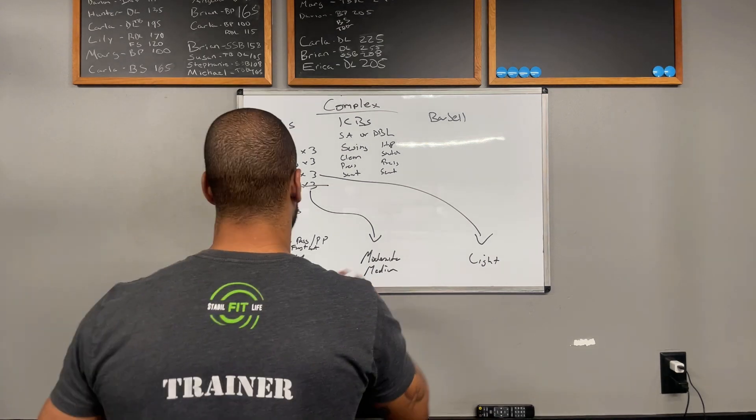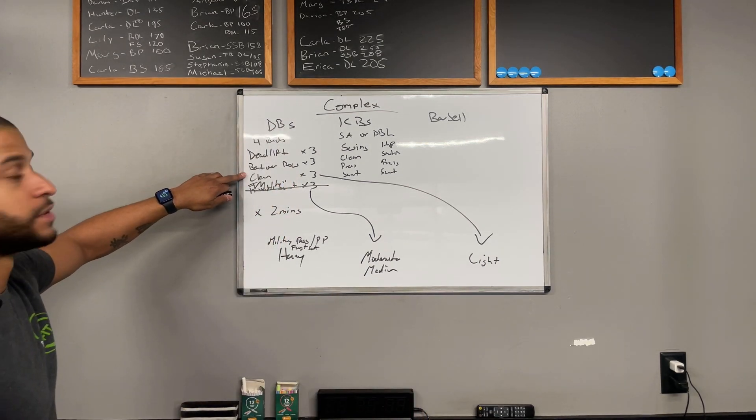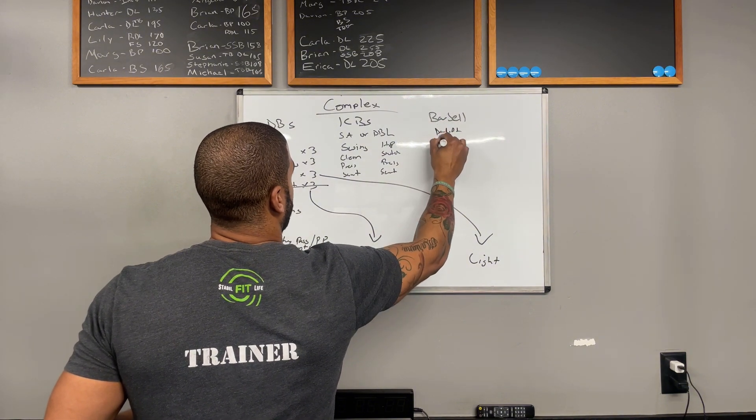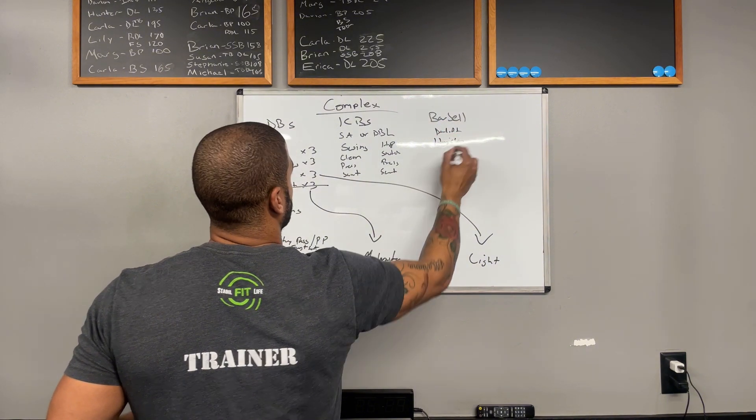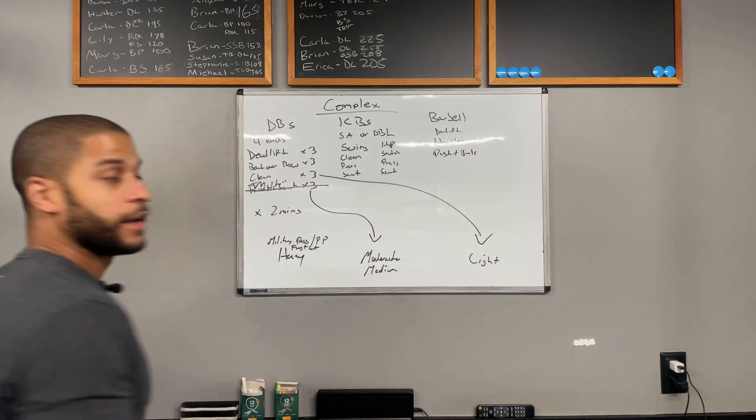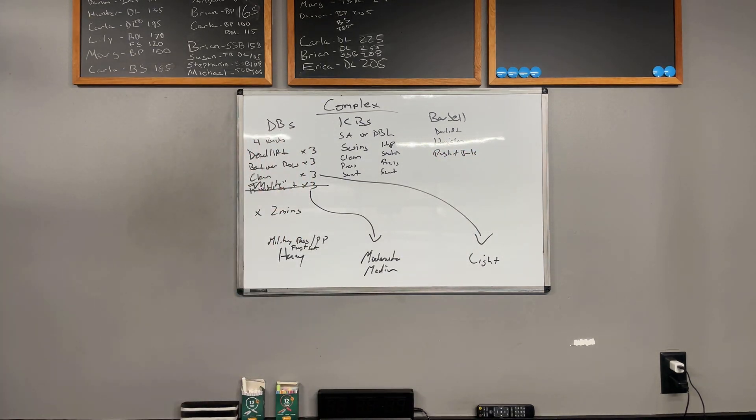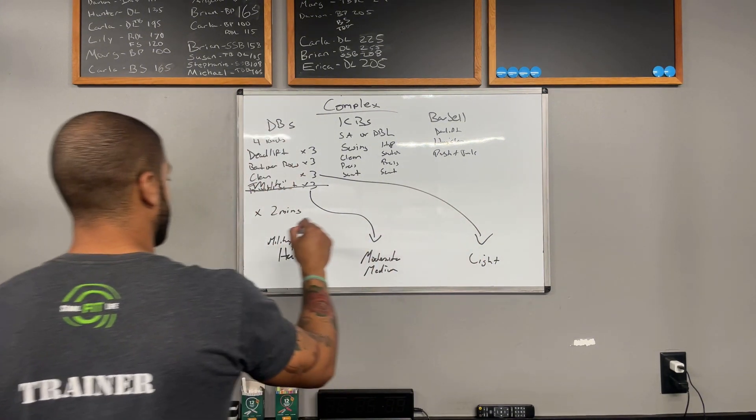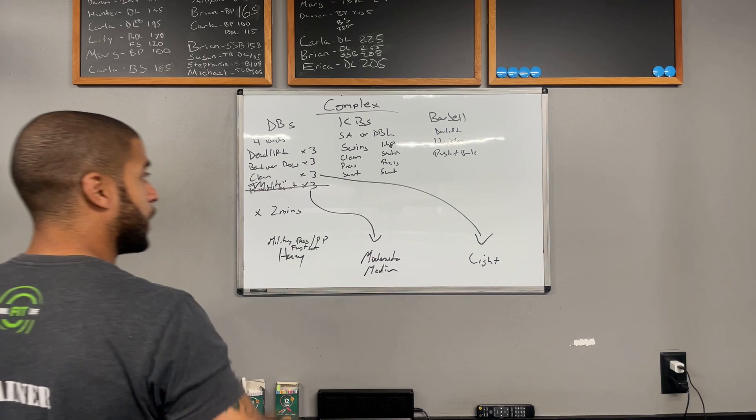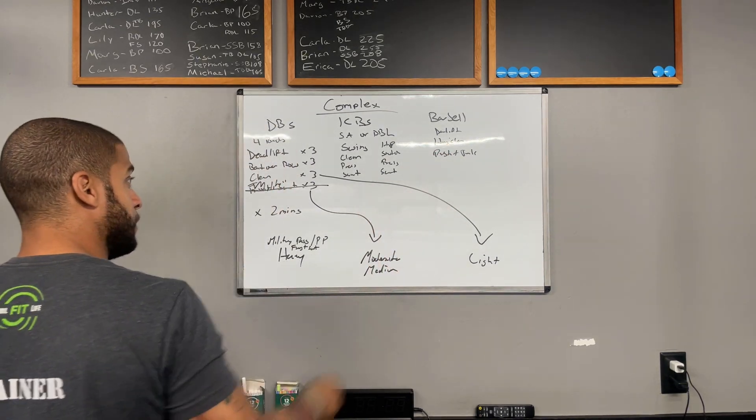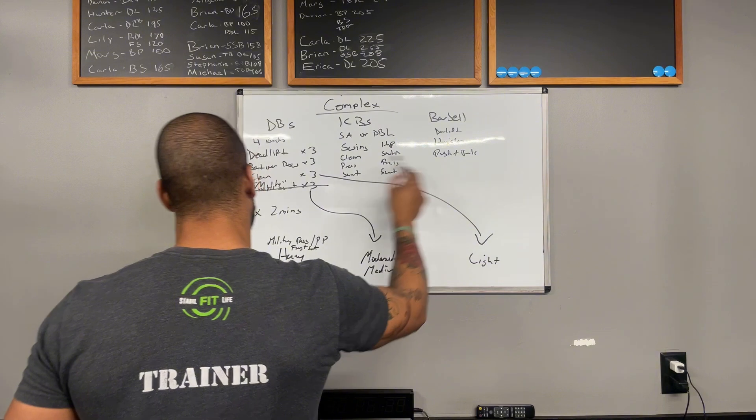Same thing with barbell. Barbell, you can easily do this. You can do a deadlift into a hang clean, into a push jerk. And then done. And if you wanted to make this a light, medium, heavy, this could be your light barbell work. Add another round, add another exercise variation to that. That could be medium. Add another exercise variation to that. That could be a heavy.